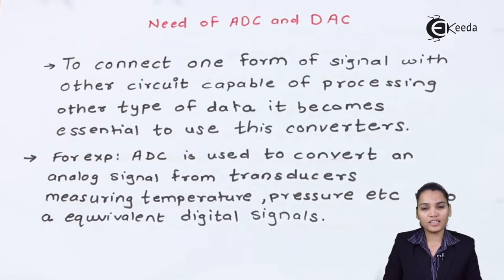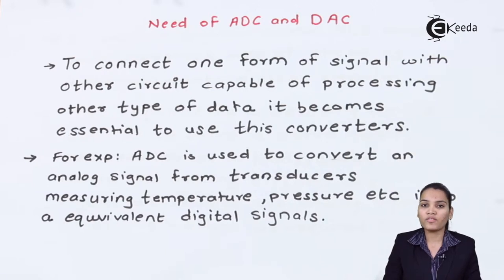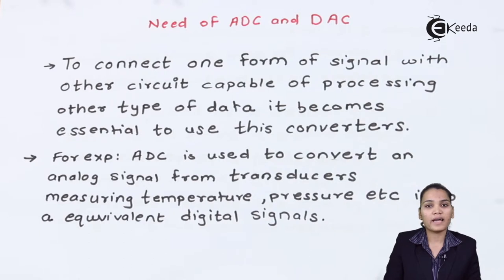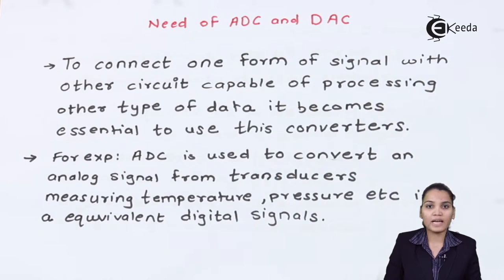ADC is nothing but analog to digital converters and DAC is digital to analog converters. In the modern world of electronics, there are two types of signals — one is the analog signal and one is the digital signal. In some applications we might require the analog data, and in some applications we might require the digital data.